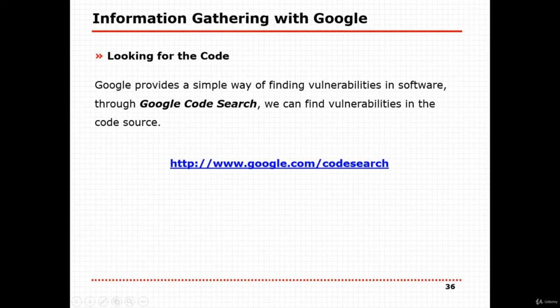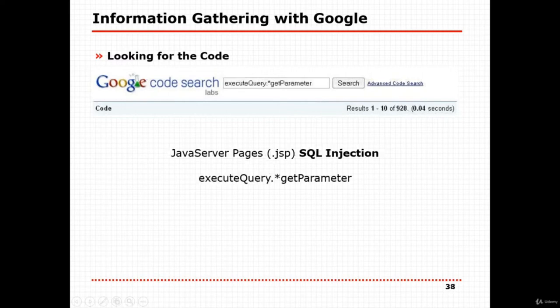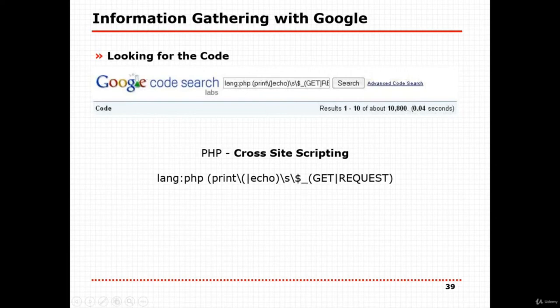Google also provides a way to find vulnerabilities in software through Google Code Search at google.com/codesearch. You can search for a specific piece of code, and Google shows you websites containing that code with an advanced code search. For example, if you search for a cross-site scripting PHP code snippet and it's found in your website's database, your website is vulnerable to that attack.